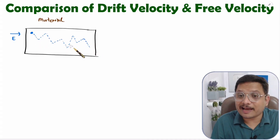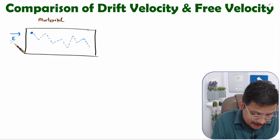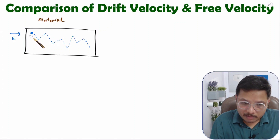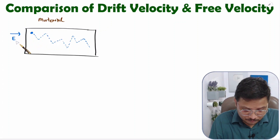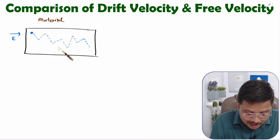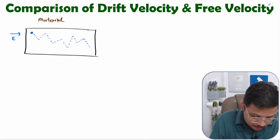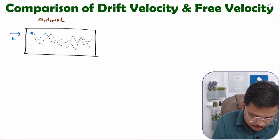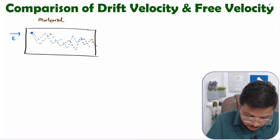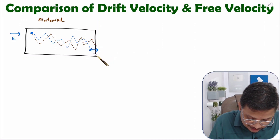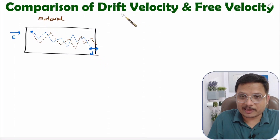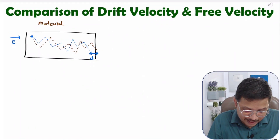Now if you apply an electric field, this charge carrier will have movement, but because of the electric field the random motion will be getting shifted. You can see that the shifting can be like this. If you observe, there is a certain distance, and whatever velocity corresponds to that distance is the drift velocity. Inside a material we calculate motion in terms of drift velocity.